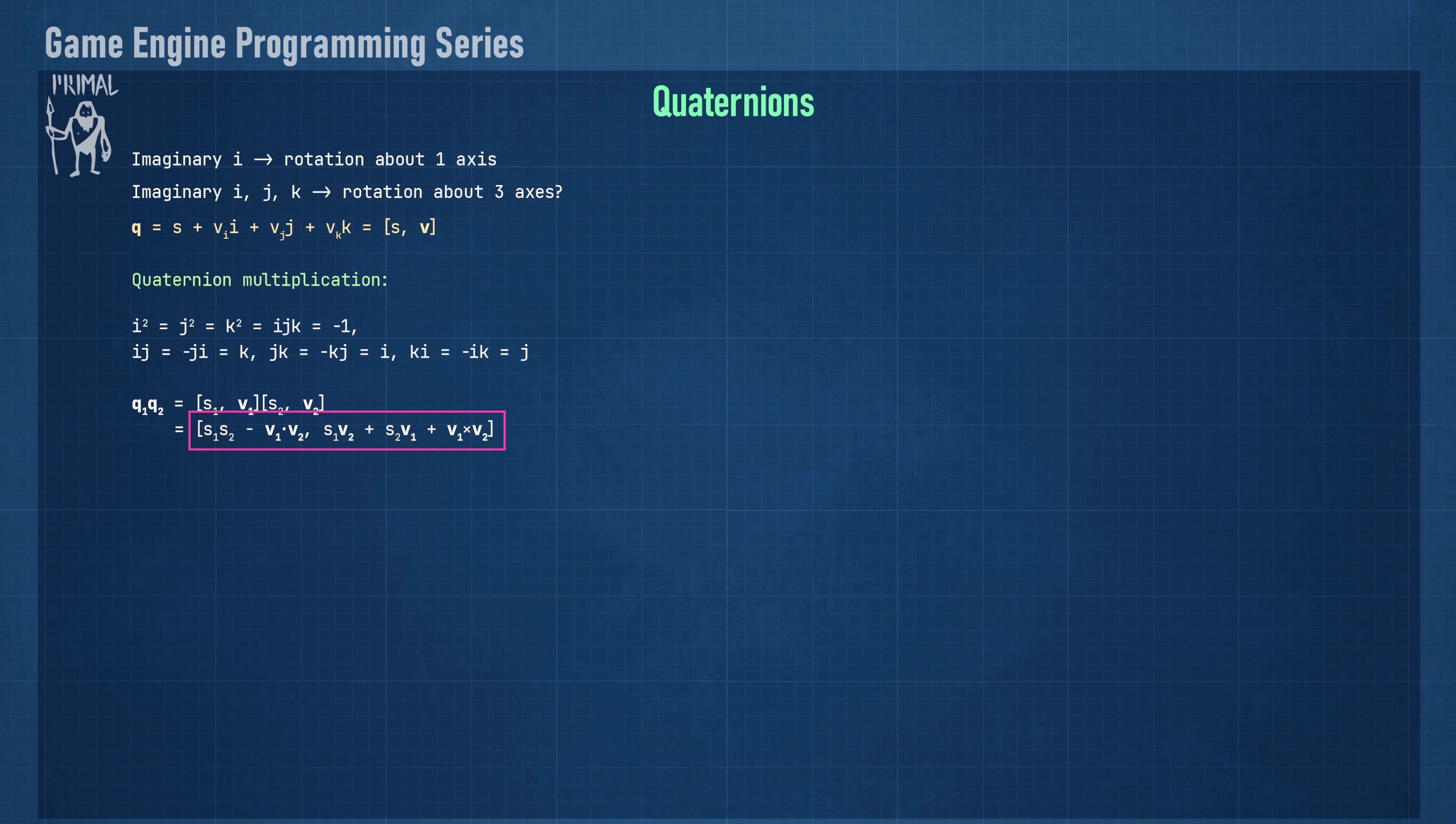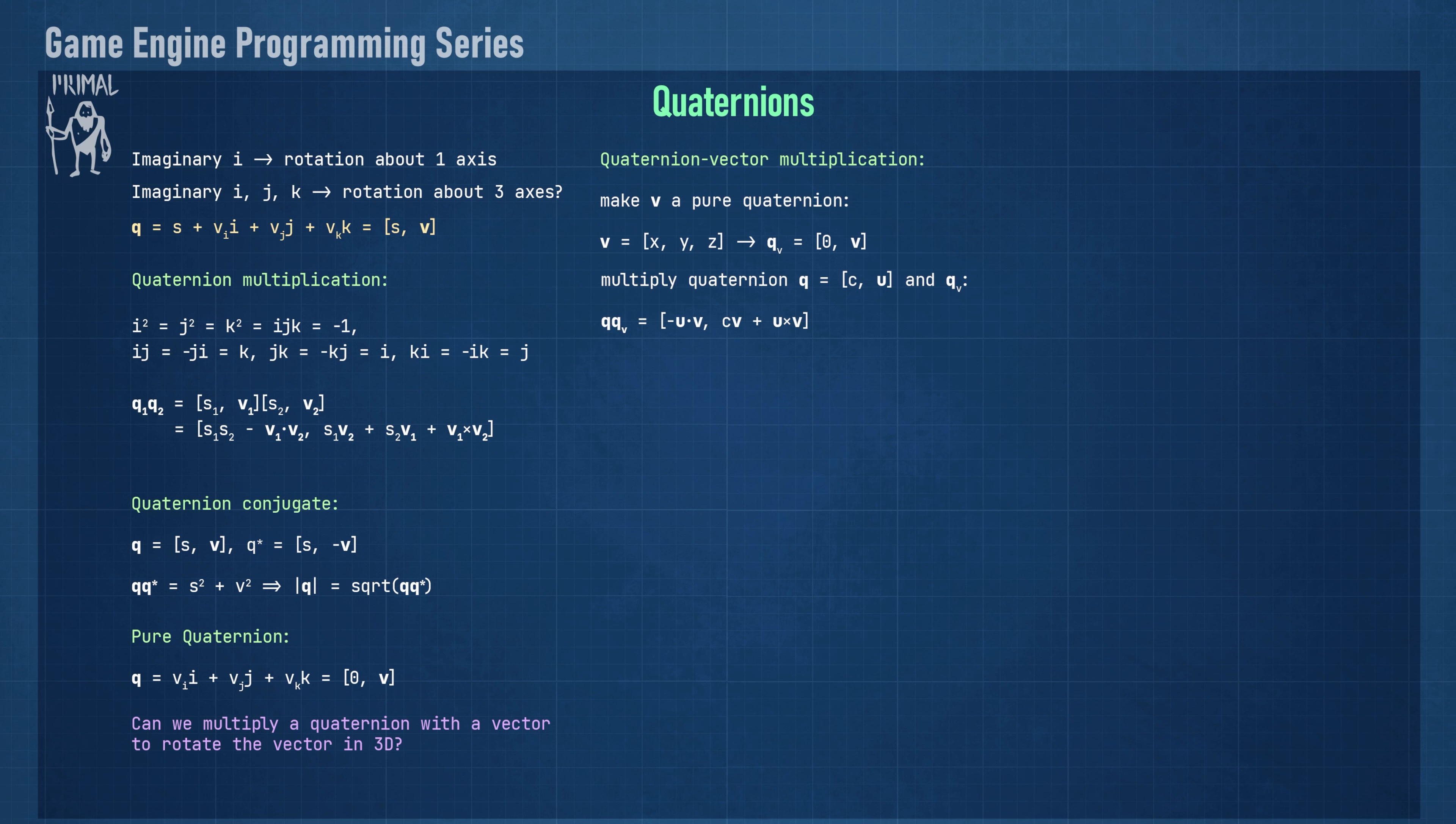Next is a quaternion conjugate, which is identical to complex conjugate. A quaternion is a pure quaternion if its scalar part is zero. We saw that multiplying a complex number on the unit circle with a vector would rotate the vector on a 2D plane. Can we do the same in three dimensions using quaternions? Let's give it a try. First, we need to convert the vector to a quaternion. We can directly put it in the vector part of a quaternion with a zero scalar part, thus constructing a pure quaternion. Now let's say we have a unit length quaternion that we'd like to multiply with our vector in order to rotate it. Using the quaternion multiplication formula, we see that we get a non-zero scalar part in the result, which prevents us from converting back to a 3D vector. So it doesn't work.